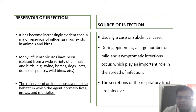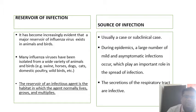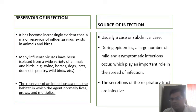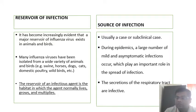What is the reservoir infection? The reservoir of an infectious agent is a habitat in which the agent normally lives and multiplies. In the case of influenza, the major reservoirs are animals and birds — most commonly swine, horses, dogs, cats, and domestic poultry. The source of infection is usually a case or subclinical case, and during epidemics there are large numbers of mild and asymptomatic cases that play an important role in spreading disease.